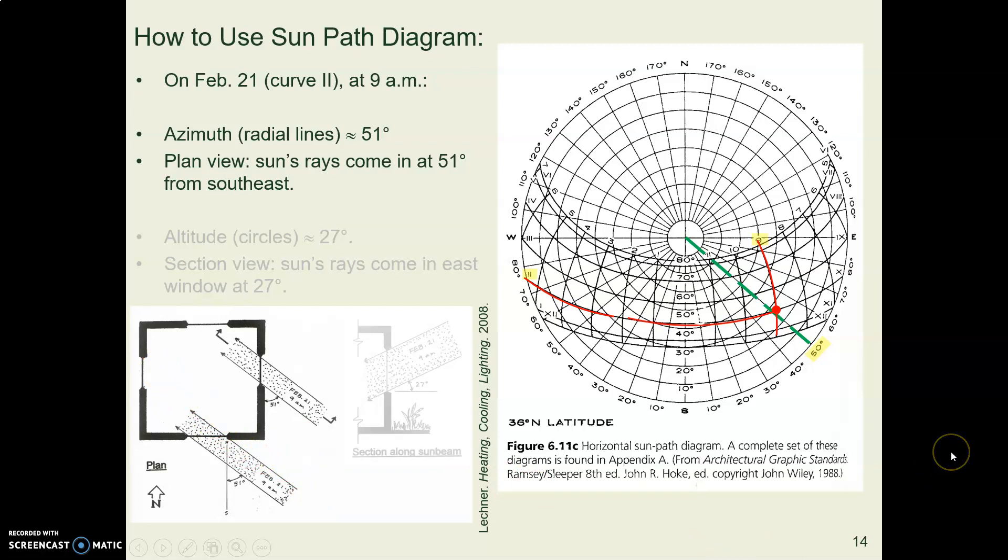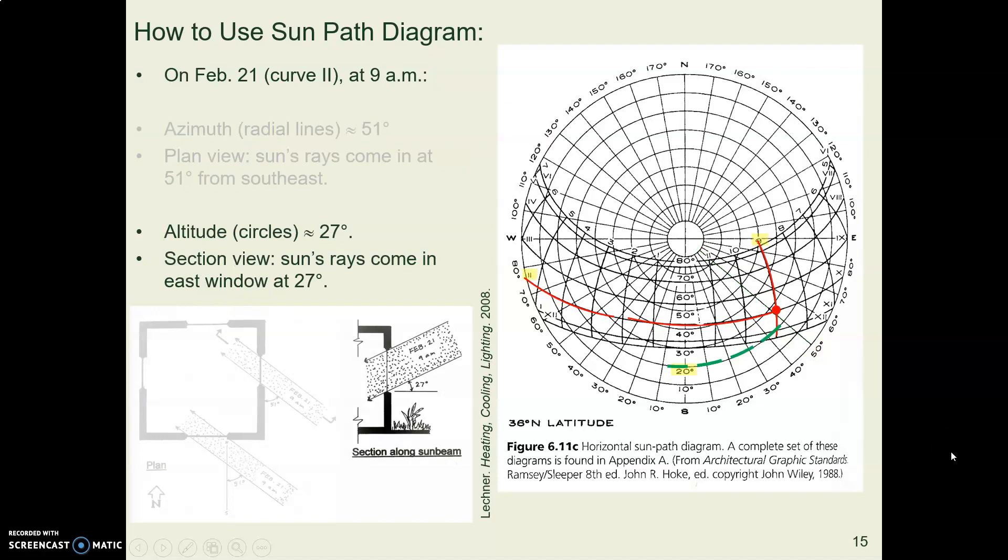All right, now let's look at how high the sun is in the sky at that time. Here is a section view looking at the side of your house. So here is one of your windows. The sun is low in the sky because it's February.